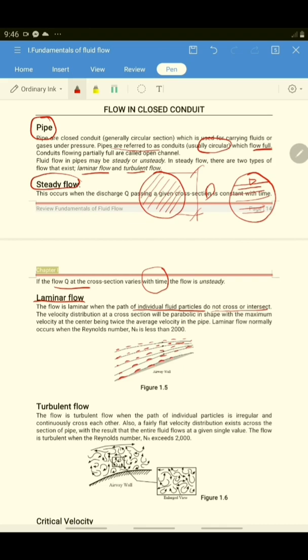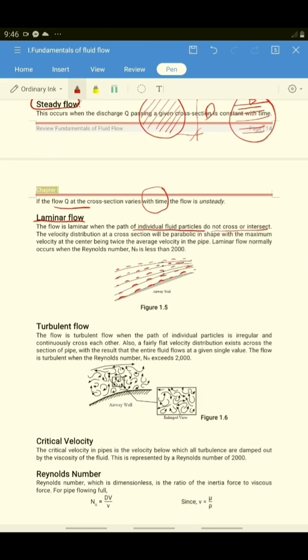It follows a certain path of flow. However, if the flow is turbulent, the path of the fluid particles is irregular and continuously cross each other. So the velocity distribution exists across the section of pipe with the result that the entire fluid flows at the given single value.